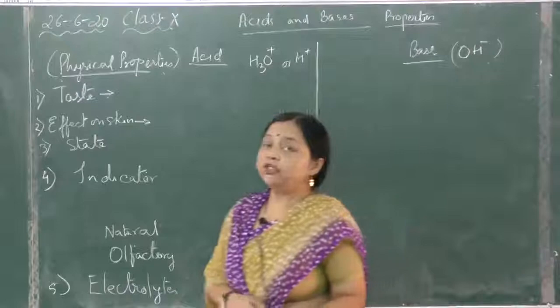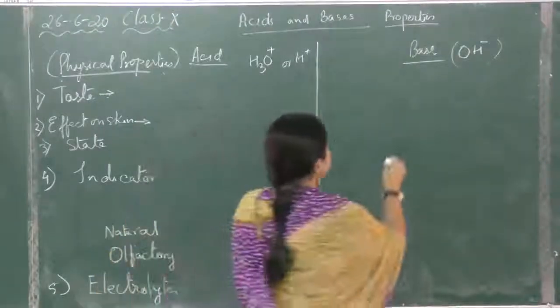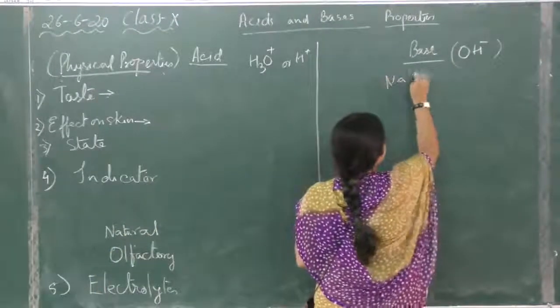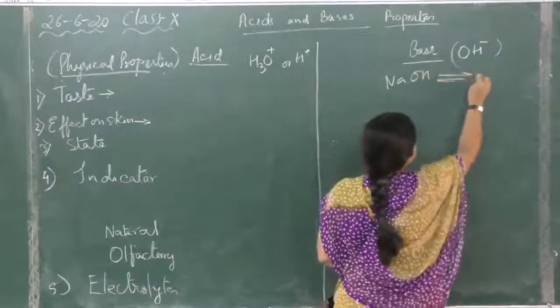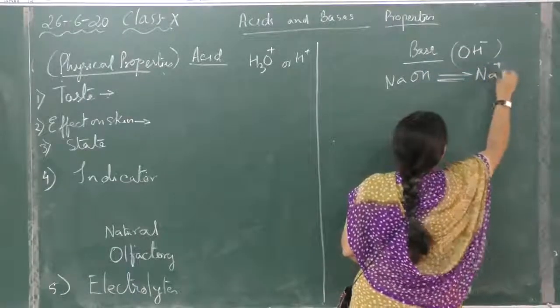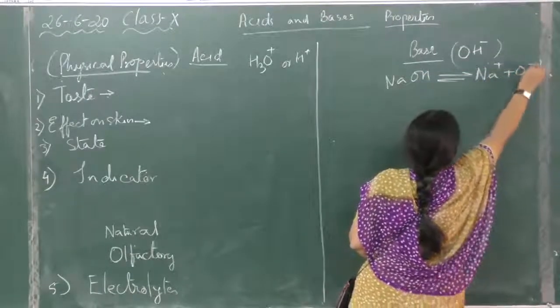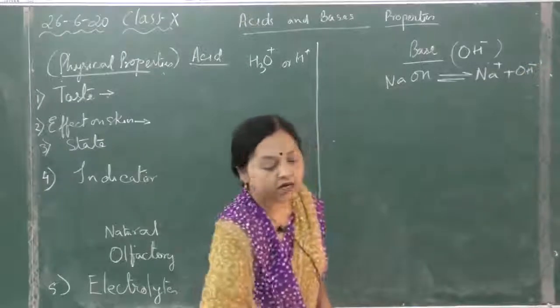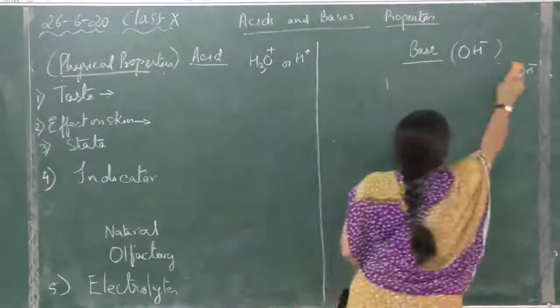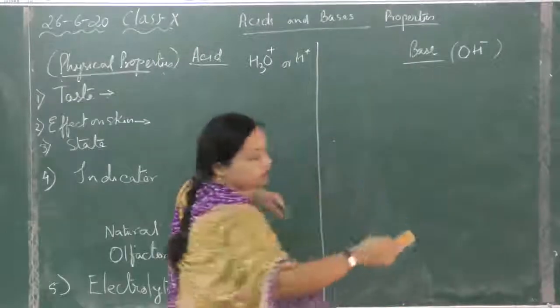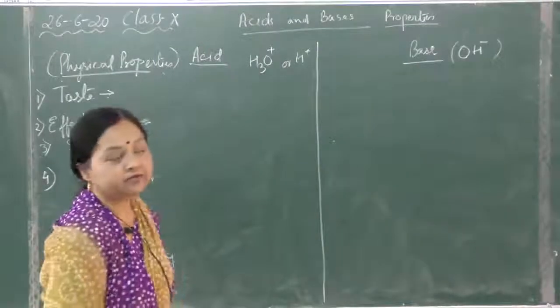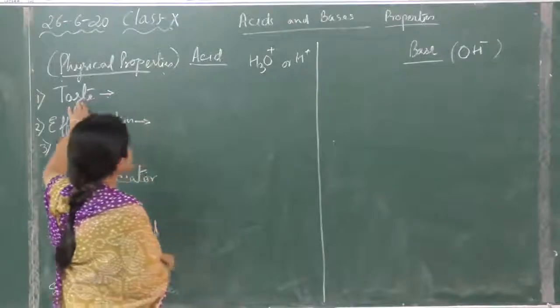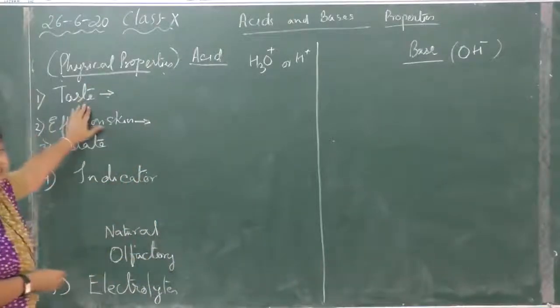If it is a soluble base, then the hydroxyl ions, OH- ions, will be furnished. For example, suppose NaOH you have taken, this is the soluble base so it will give OH- ions. Now we will forget this and we will do only the properties.